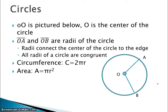In this section we also have circles. So we all know what circles look like. O is the center of this circle. OA and OB are radii of the circle. And radii just connect the center of the circle to the edge. And this part is what we're most interested in. At least for triangles. All radii of a circle are congruent. So you have one more way of proving segments congruent if we have them in a circle.